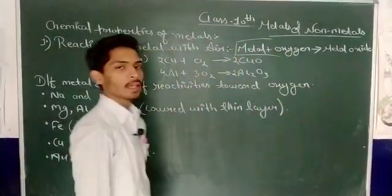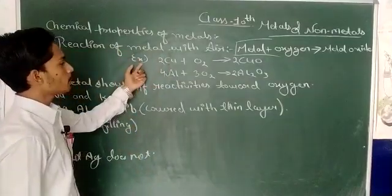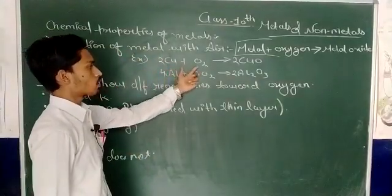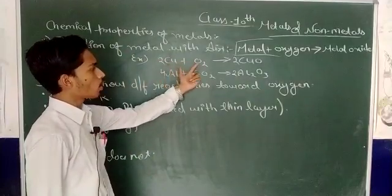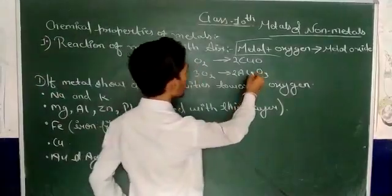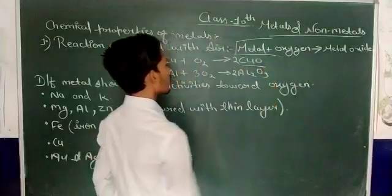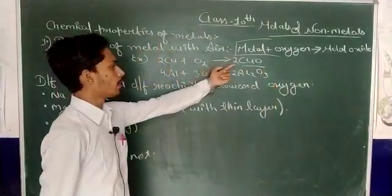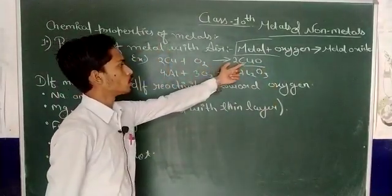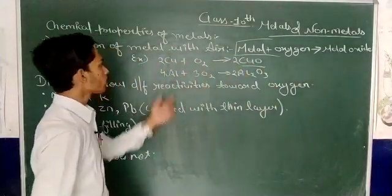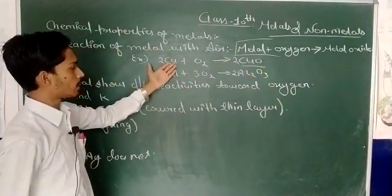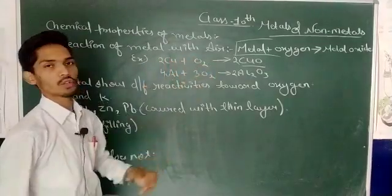Let's look at an example. Example here is copper plus oxygen. Cu means copper, O₂ is oxygen, then what will form? The copper oxide will form. The balanced equation here is 2Cu plus O₂ forms 2CuO. This means that when the metal reacts, what will form?